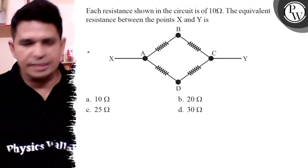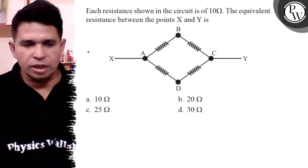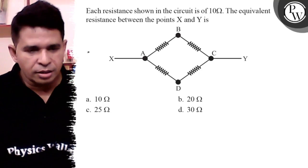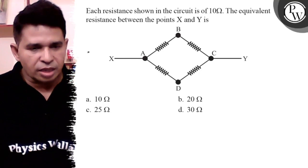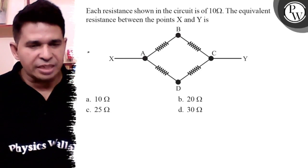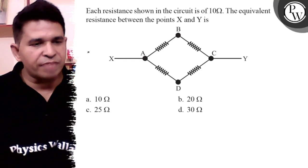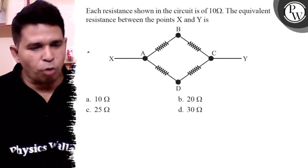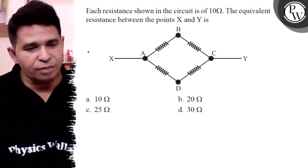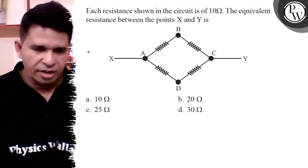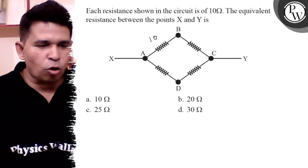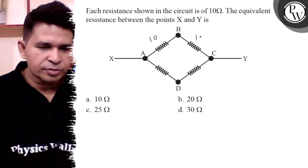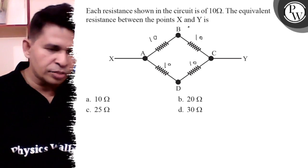Hello bachos, let us see this question. Each resistance in the circuit has ten ohms. We need to find the equivalent resistance between point X and Y. We know that all resistors are ten ohm, ten ohm, ten ohm, ten ohm.